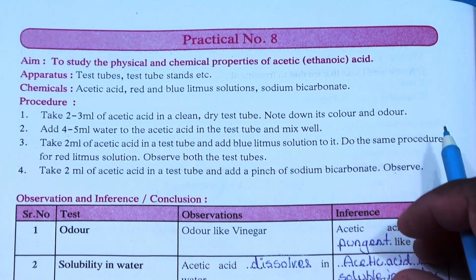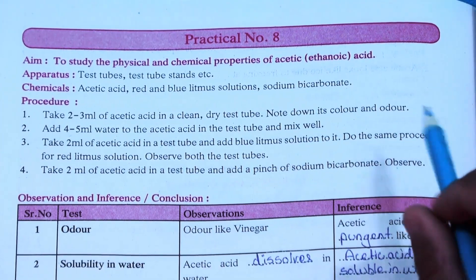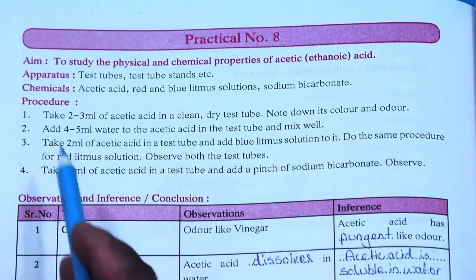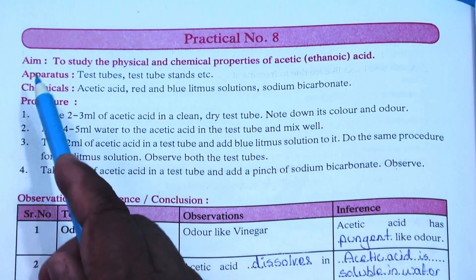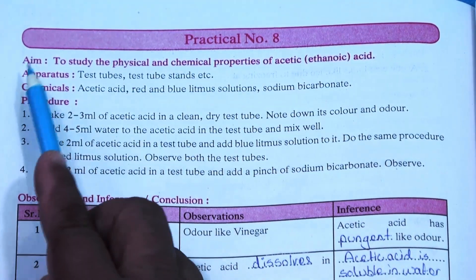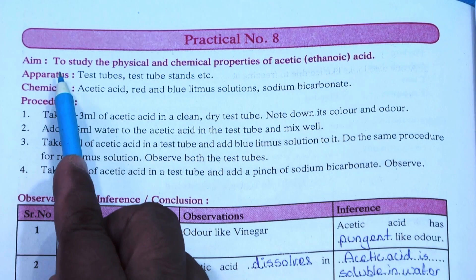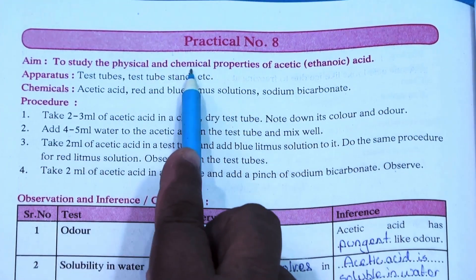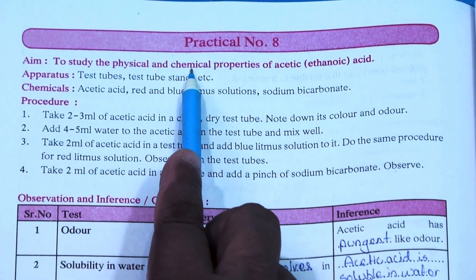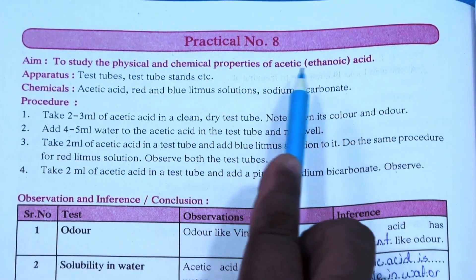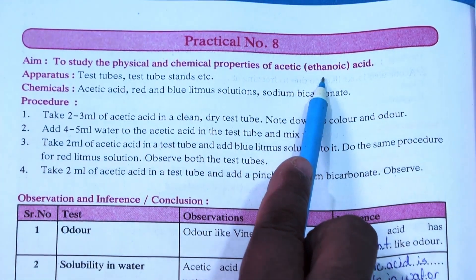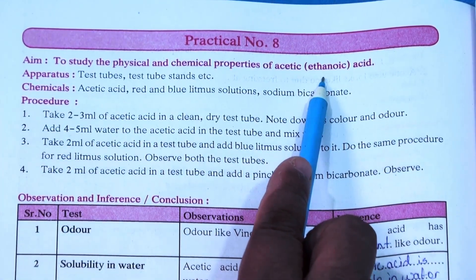Hello children, today we will be starting with practical number 8. The aim of the practical for 10th standard is to study the physical and chemical properties of acetic acid, which is also known as ethanoic acid.